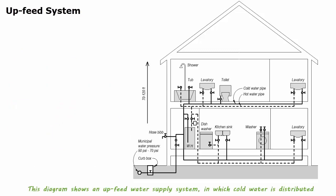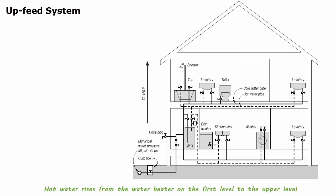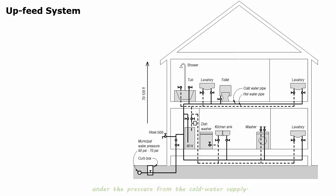This diagram shows an upfeed water supply system in which cold water is distributed under pressure from a public water main. Hot water rises from the water heater on the first level to the upper levels under the pressure from the cold water supply.